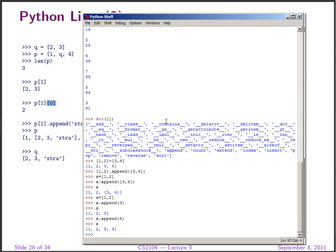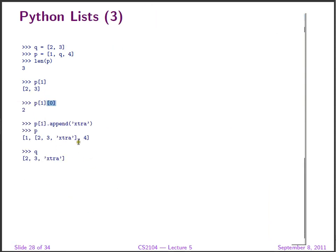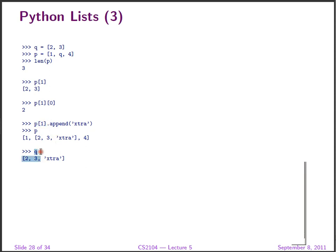We take p[1] and append one element — that element appears inside the list that is a member of the outer list. Now, p and q are aliased: q is a part of p. So even though we have been accessing p[1], p[1] is always equal to q. Every change to p[1] entails a change to q, and thus q has been changed by all these operations that were performed on p[1].